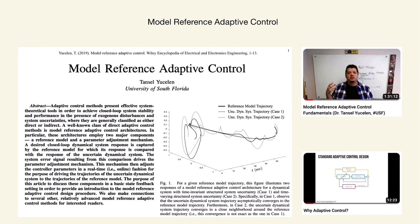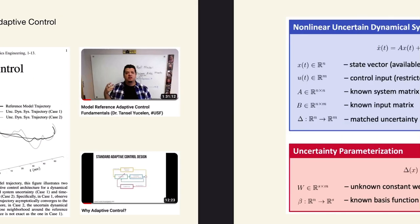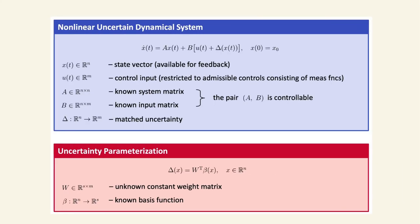By the way, if you open Google Scholar, for some reason the publication date of this article shows as 1999, but it was actually published in 2019. Alright, let's start with the general principles behind model reference adaptive control.